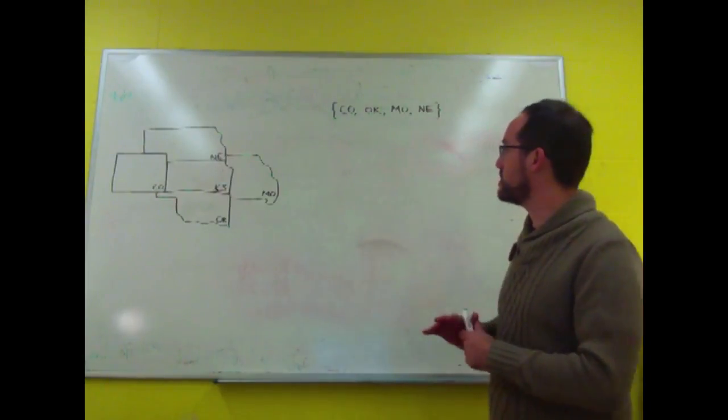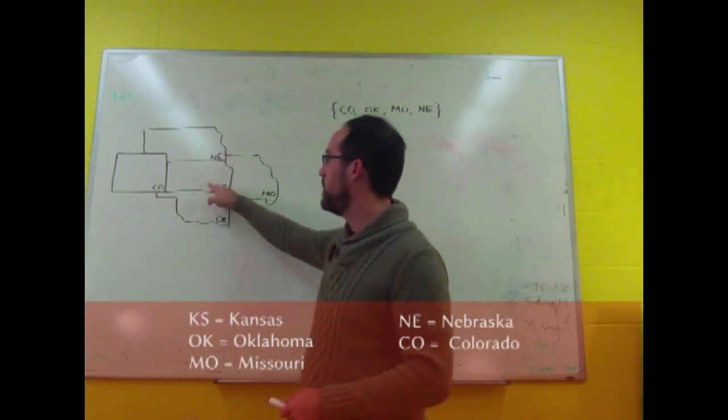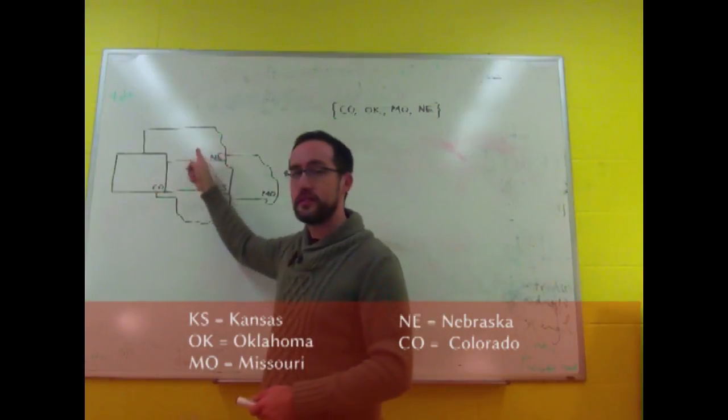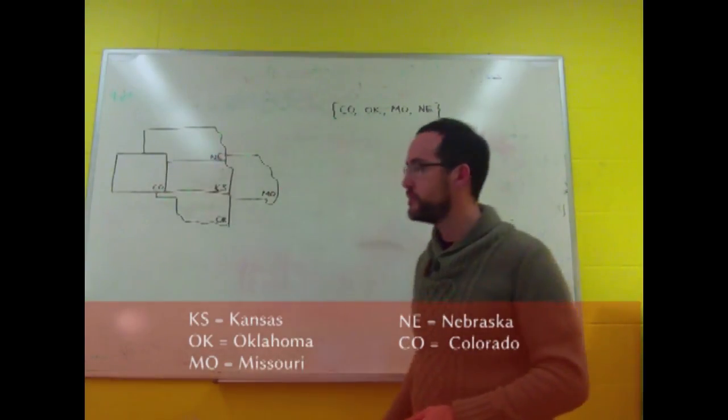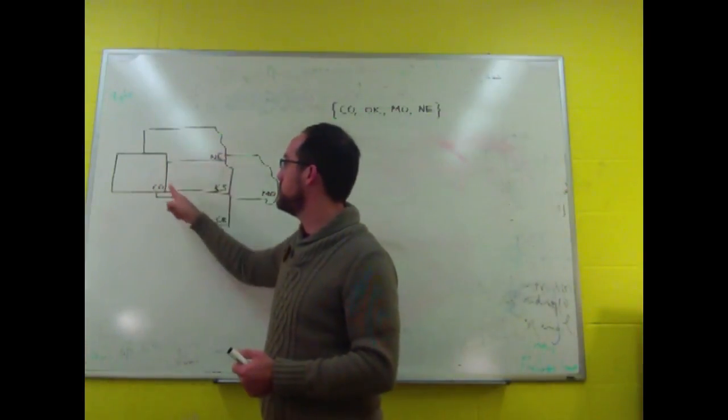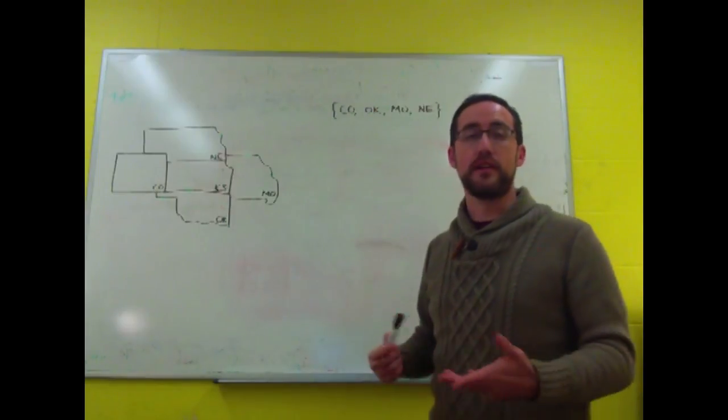So let me give you an example. This is a map, this is Kansas, and these are the states that surround it: Oklahoma, Missouri, Nebraska, and Colorado. We can take these four states here that surround Kansas and we can make a set out of them.